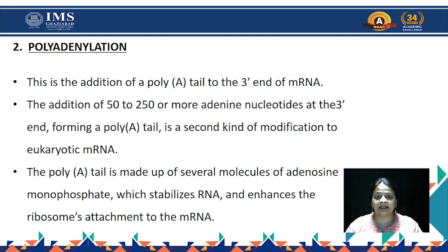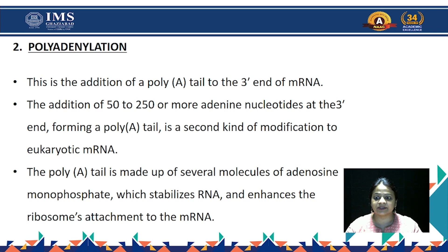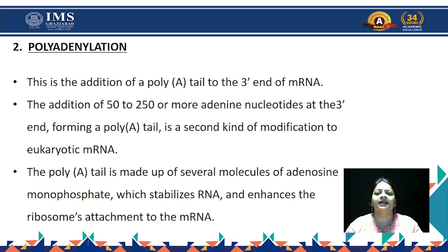Next comes polyadenylation. We have secured the 5' end, and now we need to secure the 3' end. This is the addition of a poly-A tail to the 3' end of the messenger RNA — the addition of 250 or more adenine nucleotides at the 3' end. The poly-A tail is made up of several molecules of adenosine monophosphate, which stabilizes the RNA and enhances ribosome attachment to the messenger RNA, also stabilizing the messenger RNA at the 3' end.